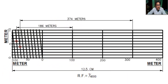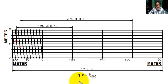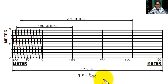Finally, we always mark the length of the scale — 12.5 centimeters — and below the scale we always write the RF, which is 1 by 4000. It is clear, my students.